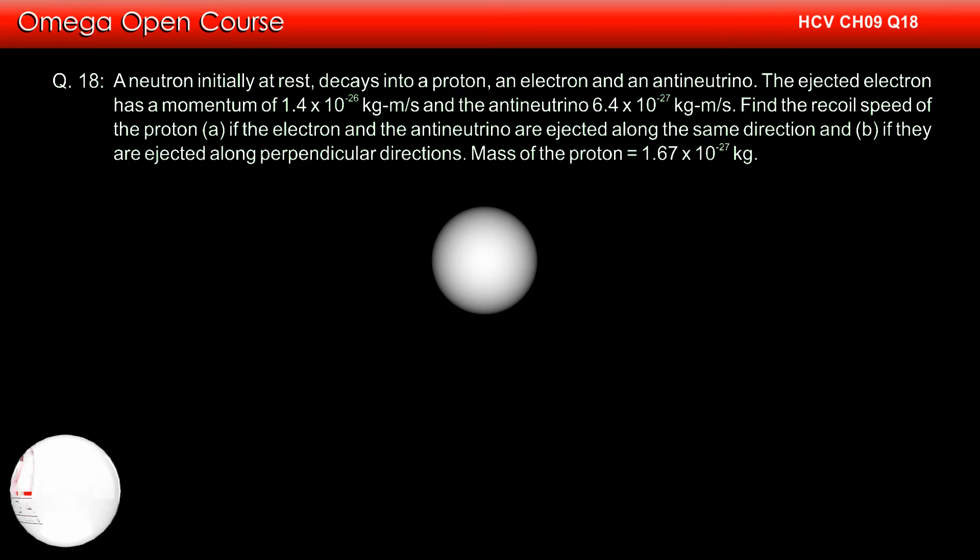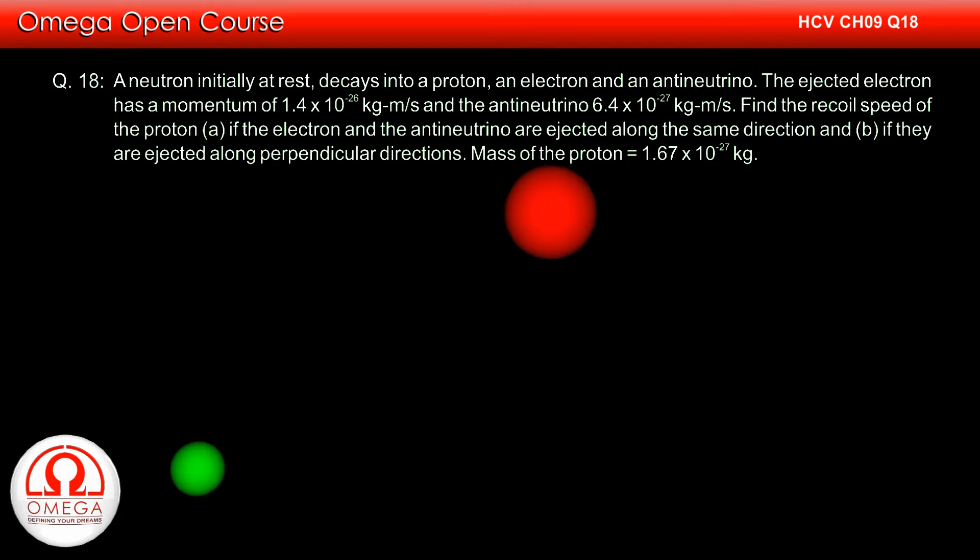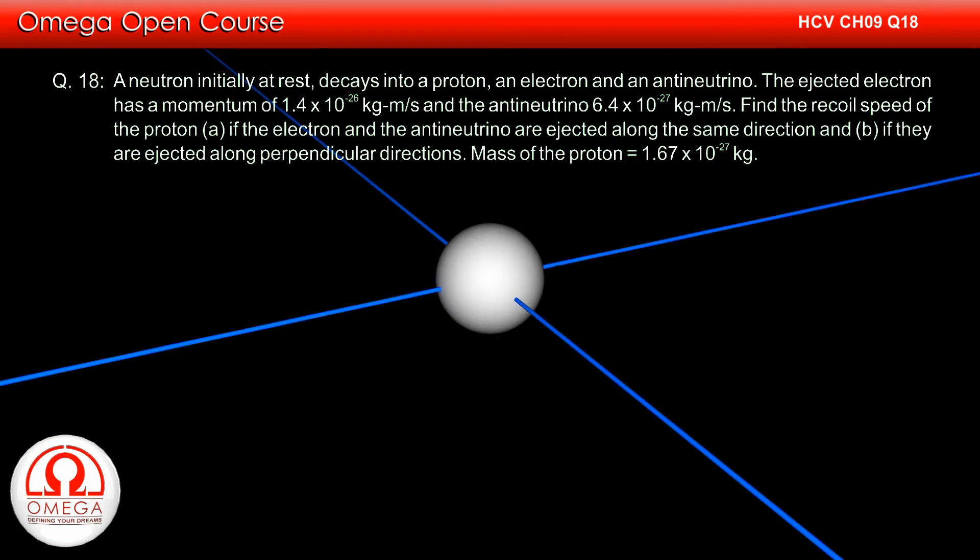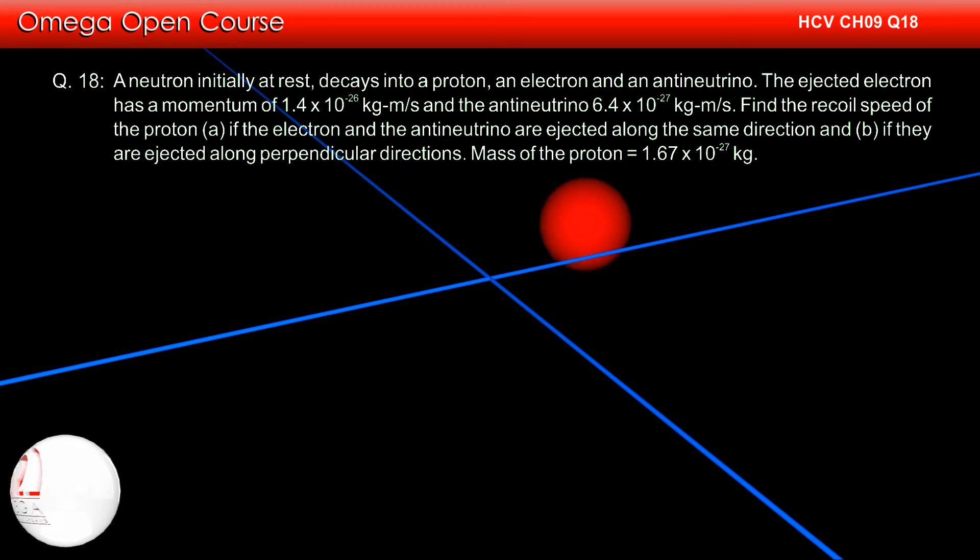A neutron initially at rest decays into a proton, an electron, and an anti-neutrino. The ejected electron has a momentum of 1.4 x 10^-26 kg·m per second and the anti-neutrino 6.4 x 10^-27 kg·m per second. Find the required speed of the proton if (a) the electron and anti-neutrino are ejected along the same direction and (b) if they are ejected along perpendicular directions.